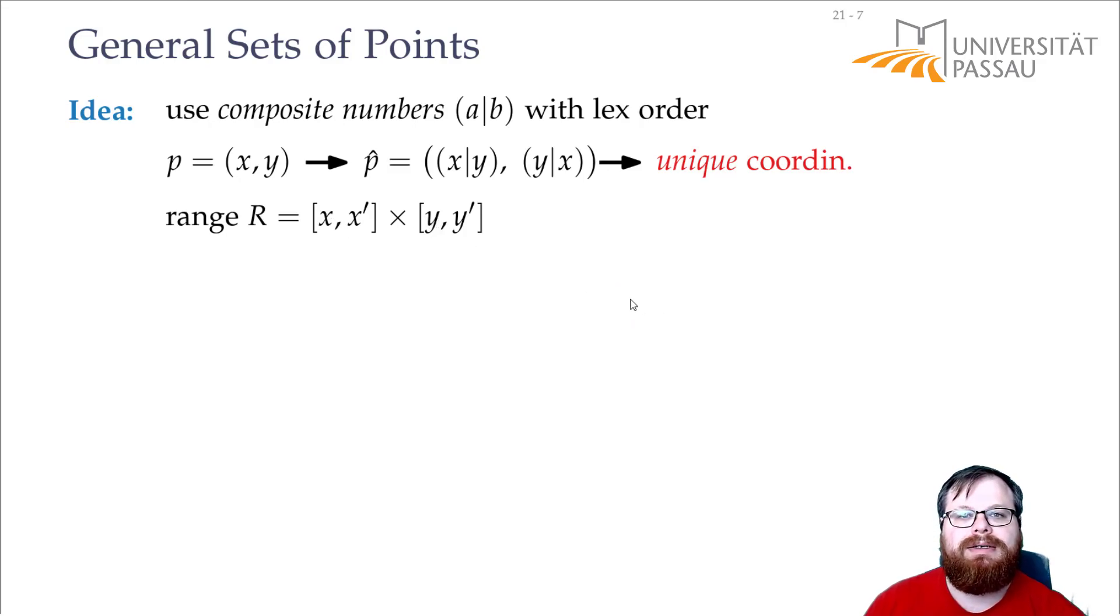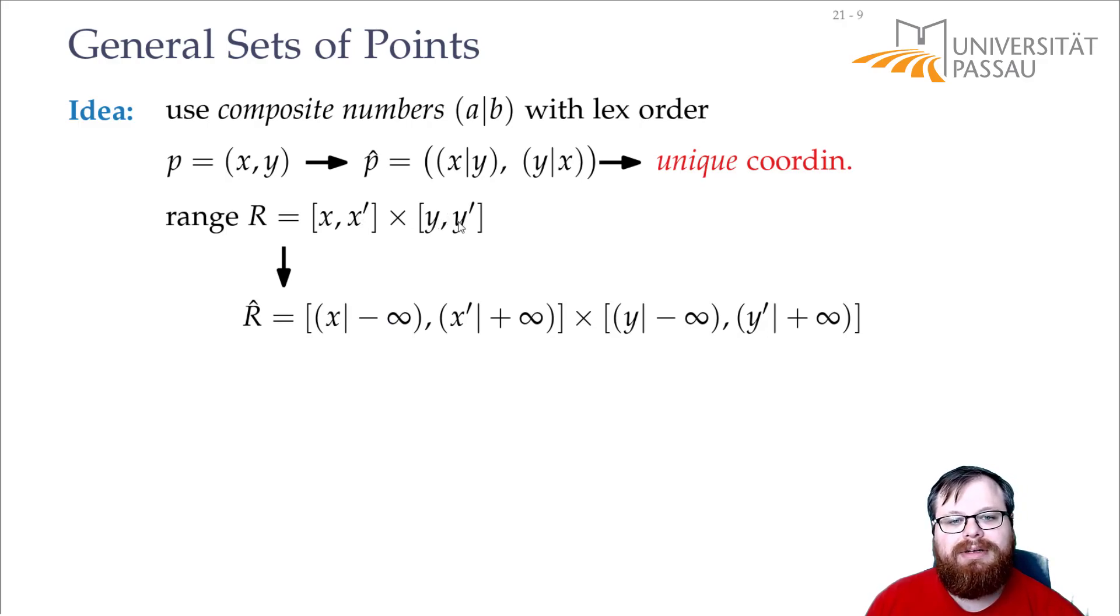So we have to make sure that whatever range we query for, all the points that have x-coordinate at least x and at most x-prime lie inside, and the same with the y-coordinates. So, our query range that we get for the composite numbers also has to add minus infinity here, plus infinity here, minus infinity here, and plus infinity here, to get all the points with these coordinates.